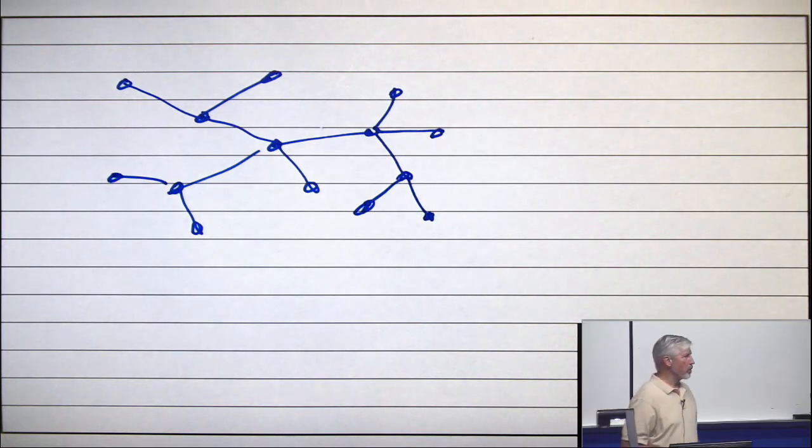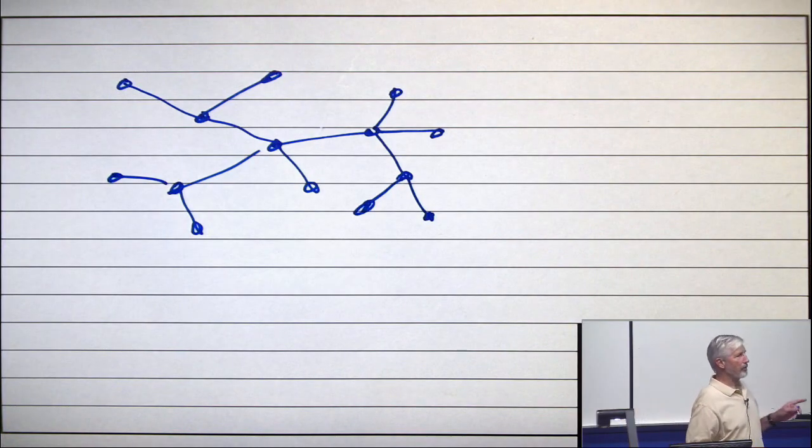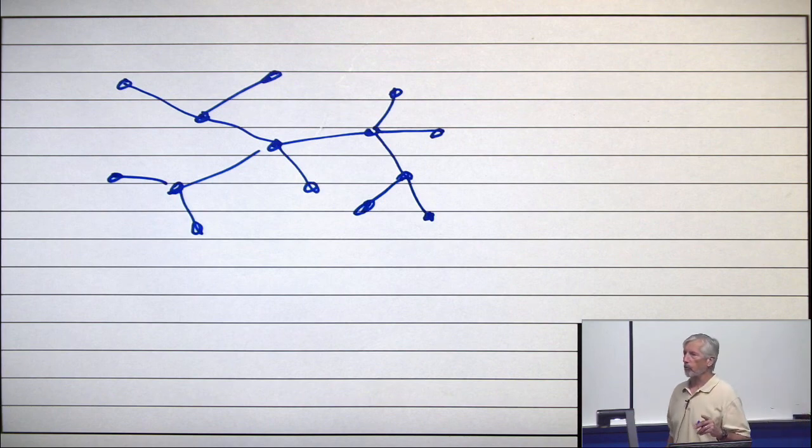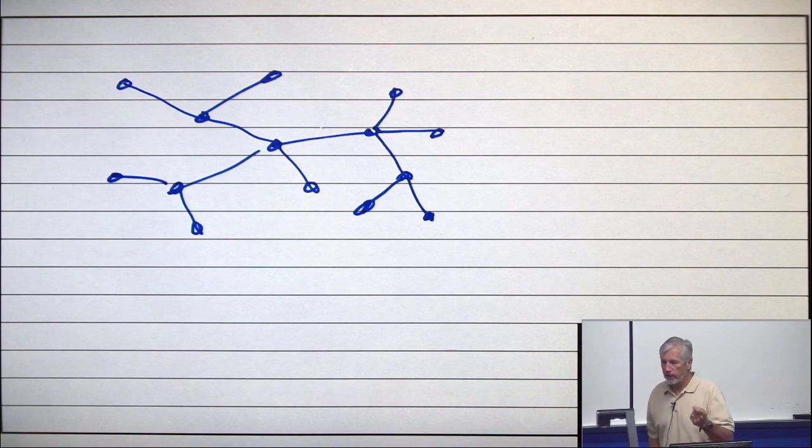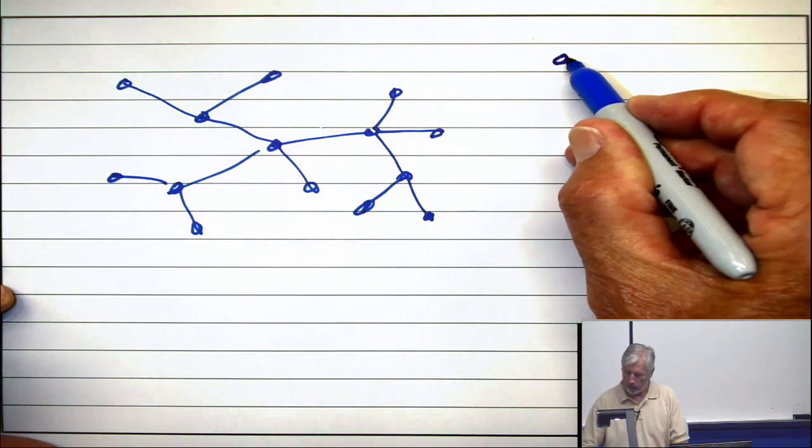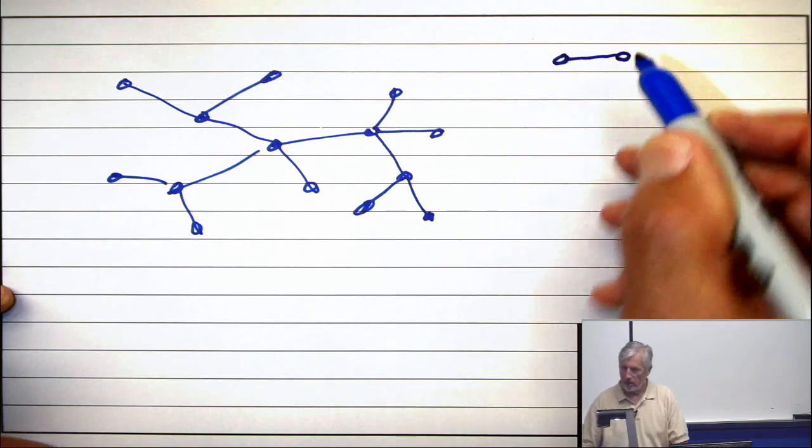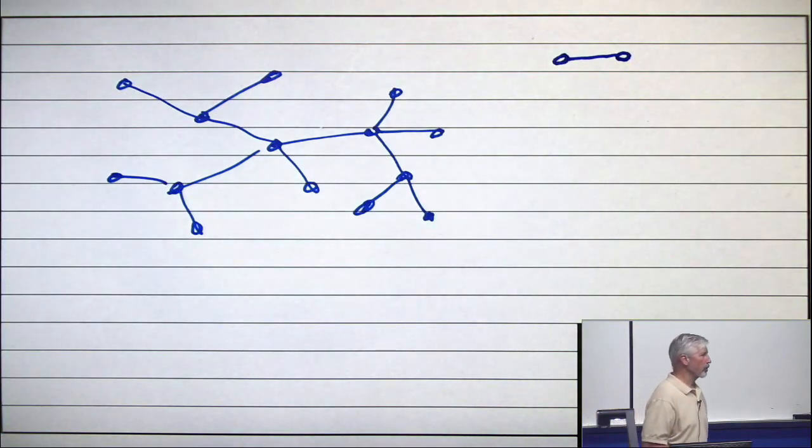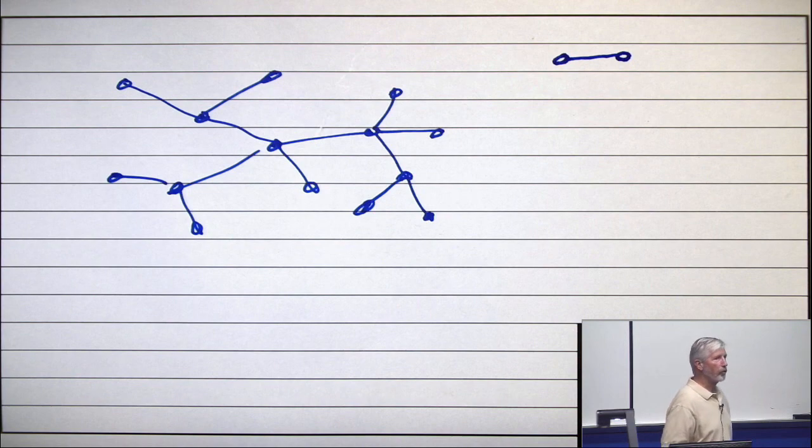So what we want to prove is that if you have a tree on n vertices where n is at least two, it has at least two leaves. So we're going to prove this by induction. Here's the base case: a tree on two vertices, there's only one, it looks like that, and both of the vertices are leaves. So it's true.